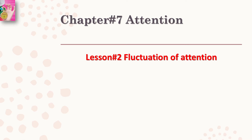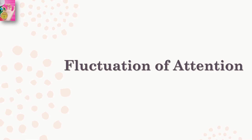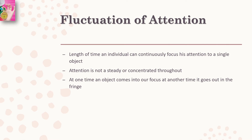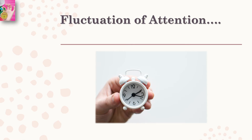In this video we'll start Lesson 2 of Chapter 7, which is the fluctuation of attention. Fluctuation of attention is basically another phenomenon of attention, and it refers to the length of time an individual can continuously focus his attention on a single object. Attention is not steady or concentrated throughout — at one time an object comes into focus and at another time it goes out.